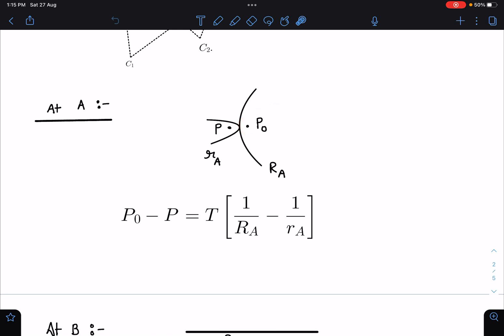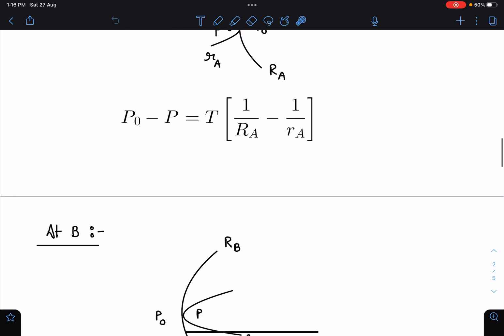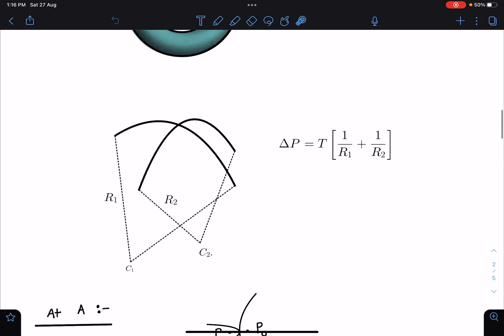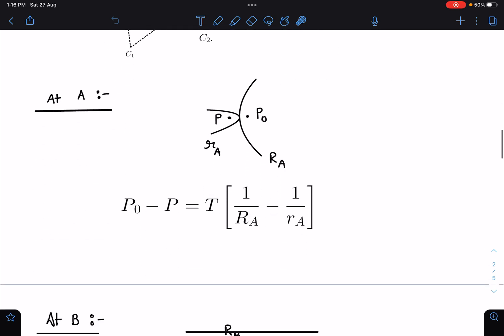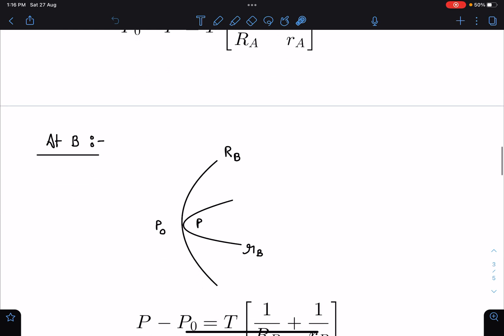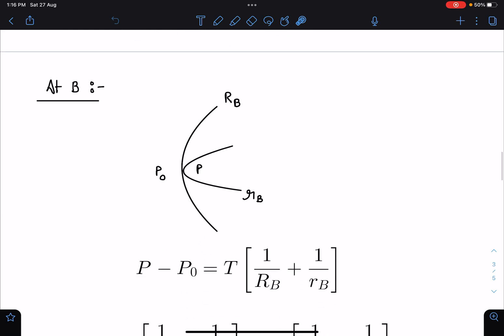Similarly at point B, one radius of curvature is this, another one is this. R_B and capital R_B, both are in same direction. There is no doubt at all that P is greater in this situation and P_0 is smaller.